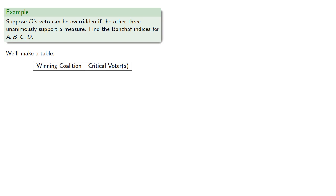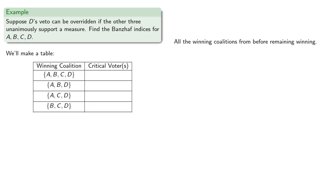So again, we'll make a table that lists the winning coalitions and identifies the critical voters. All the winning coalitions from before remain winning.